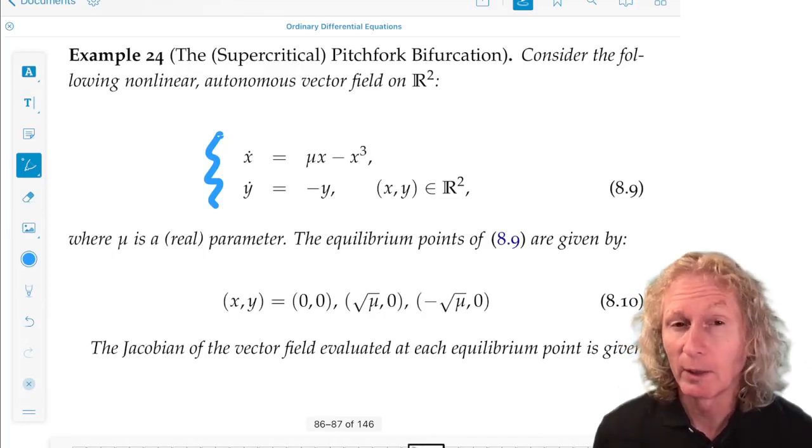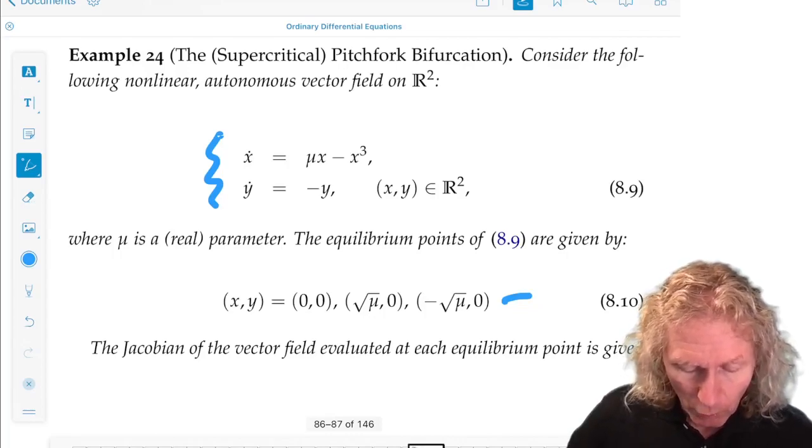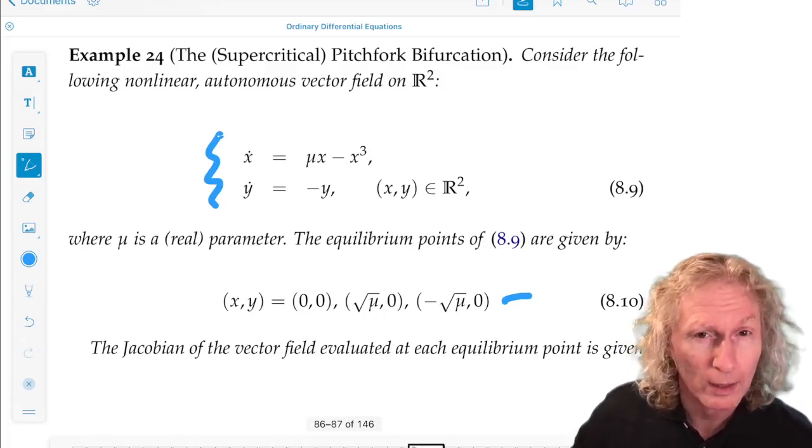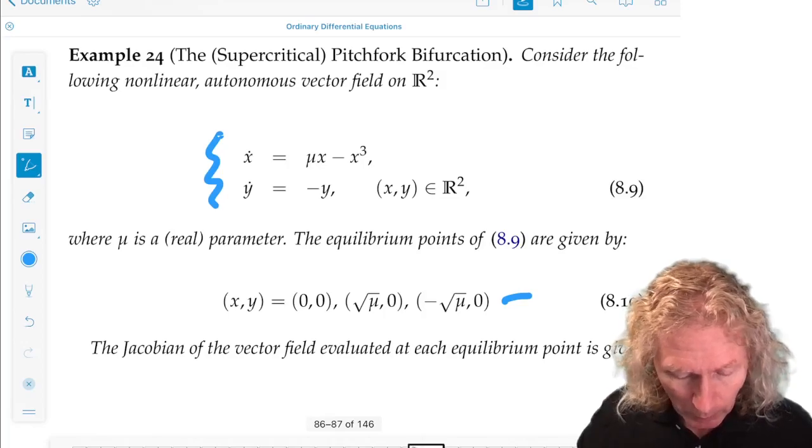This equation has at most three equilibria. For μ greater than 0, it has 3. For μ less than 0, it has 1. And all three coalesce at μ equals 0.